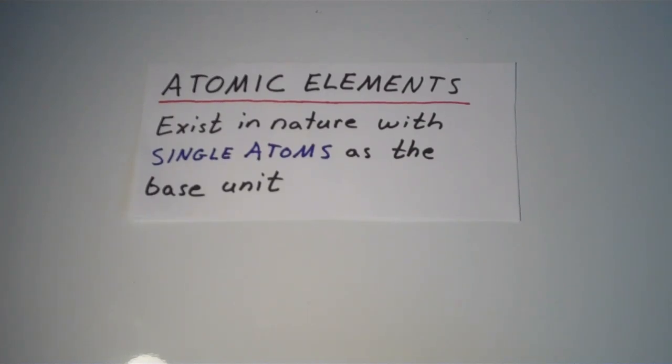Alright, so in this video we're going to take a look at elements and compounds at the atomic level, and we're going to define a couple of terms along the way. So first I'm going to go over atomic and molecular elements, and then I'm going to go over molecular and ionic compounds.